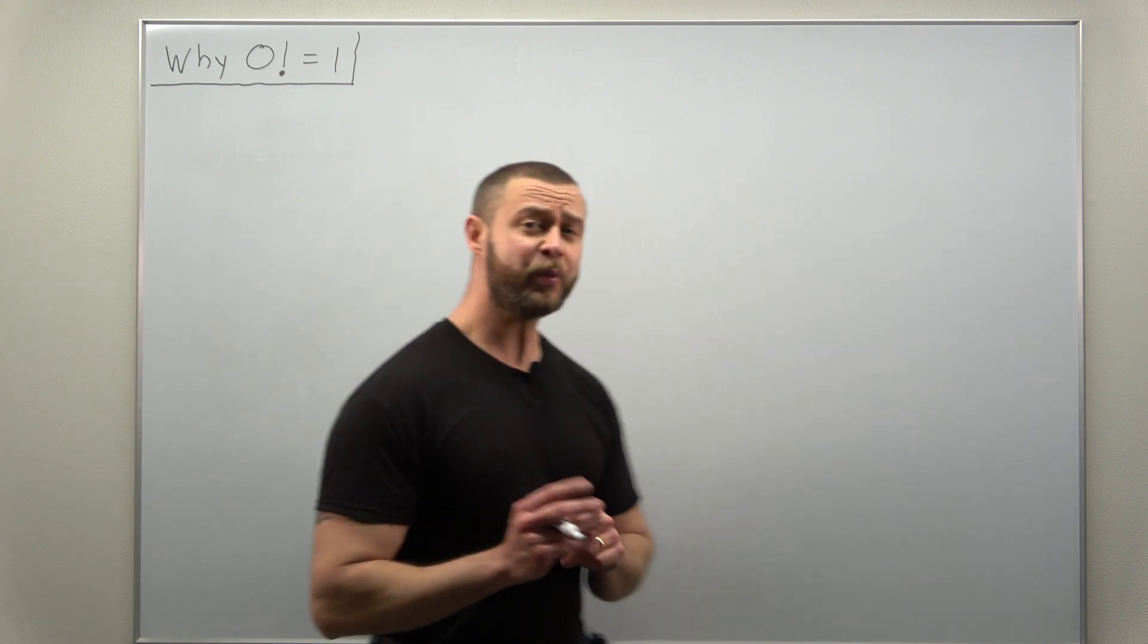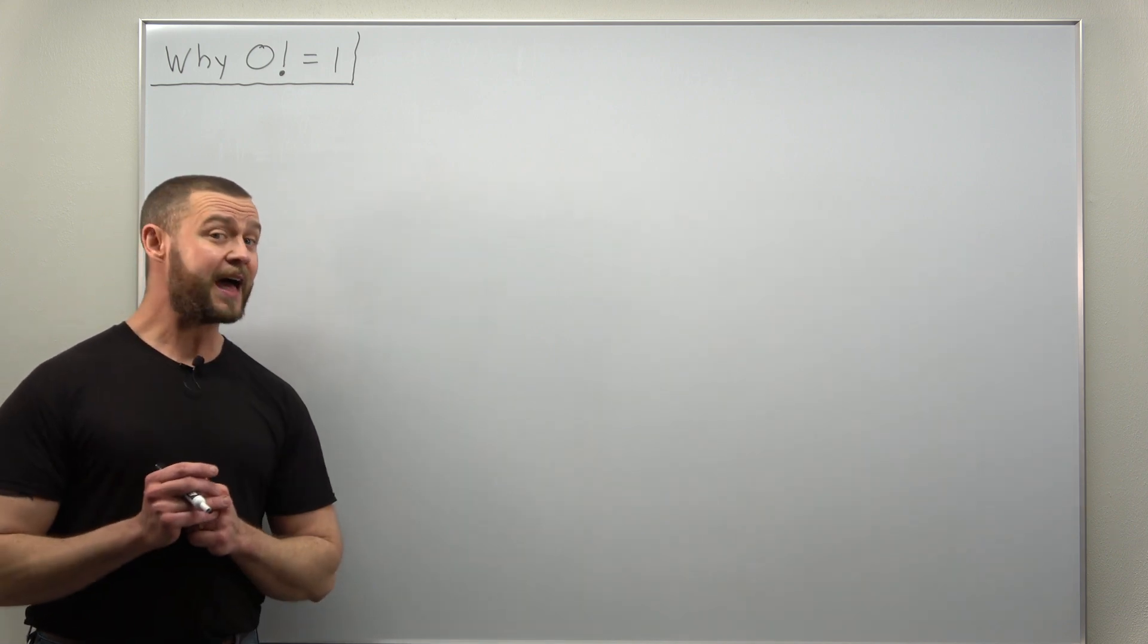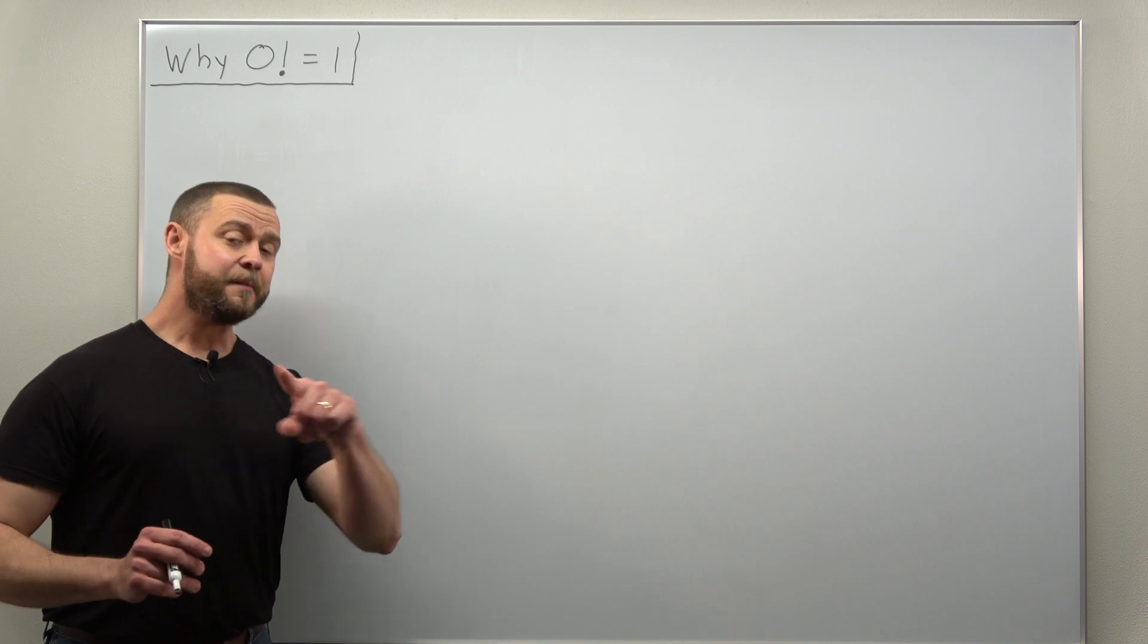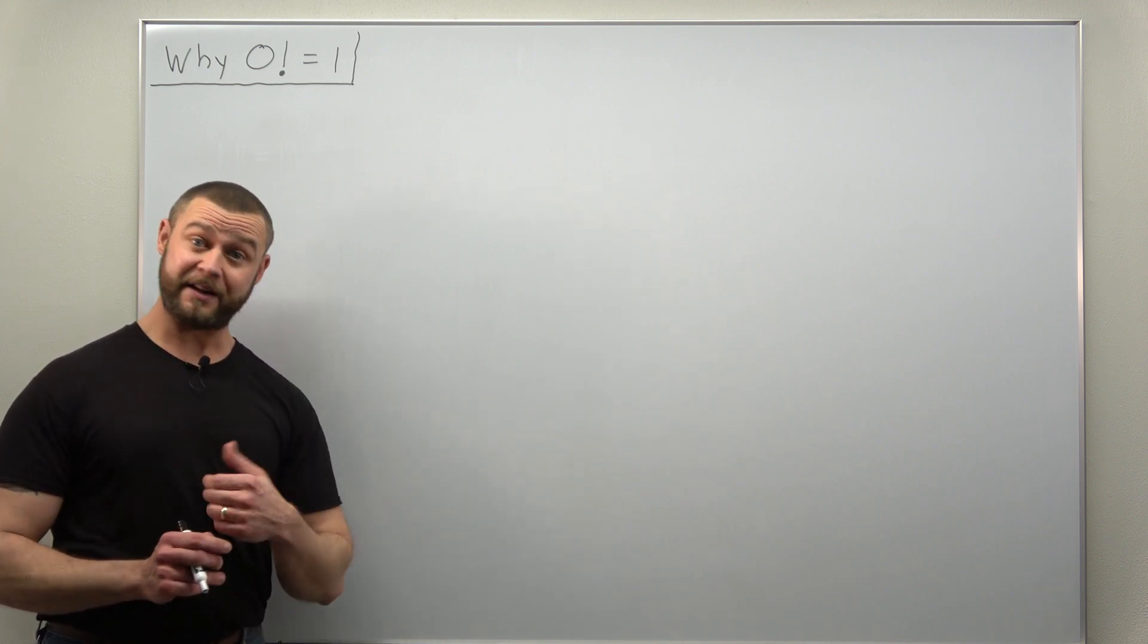Now the simplest way to define the factorial for a positive integer is we take that positive integer and then multiply it by all the positive integers less than it down to one.